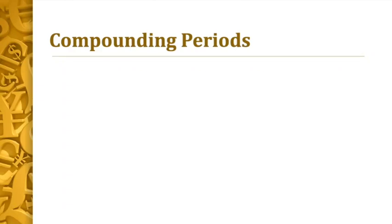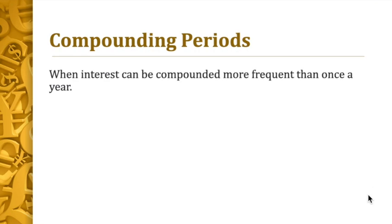In this video we're going to continue our lessons in compound interest. In particular, we're going to talk about compounding periods. This is lesson two for compound interest. When interest can be compounded more frequently than once a year — remember in our previous examples it is specifically written that the interest is compounded annually or annual compound interest.